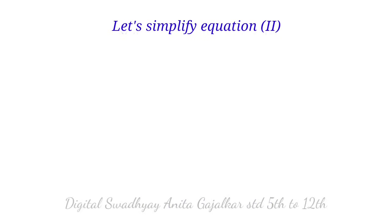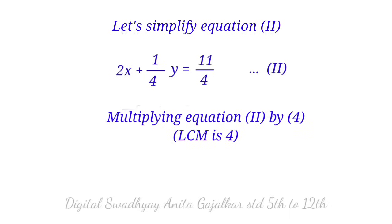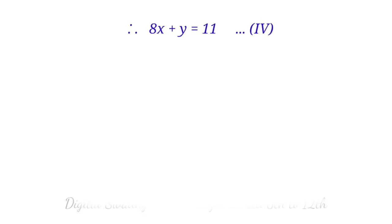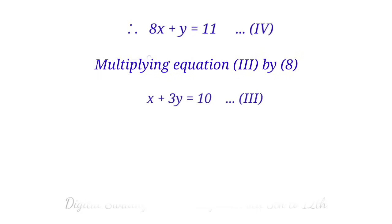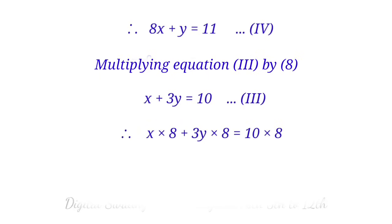Simplifying equation second by multiplying by 4 (LCM is 4): 2x into 4 plus (1/4)y into 4 equal to (11/4) into 4, giving 8x plus y equal to 11 (fourth equation). The coefficient of x is 8, so we multiply equation 3 by 8: 8x plus 24y equal to 80 (equation 5).